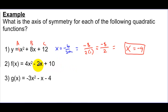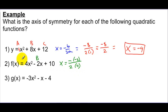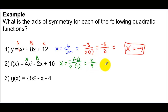For this next one, my b value is negative 2, so be careful. I'd say x equals negative b, where b is negative 2, so I have negative negative 2 over 2 times 4, because my a value is 4. Simplifying: negative negative 2 is positive 2, and 2 times 4 is 8, giving the fraction 2/8. That simplifies to 1/4. So this whole graph is centered on the vertical line x = 1/4.